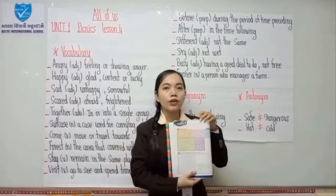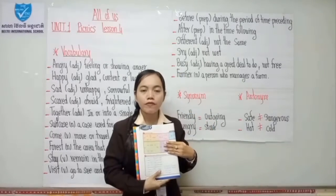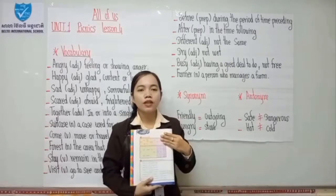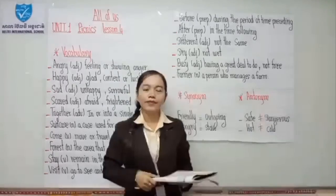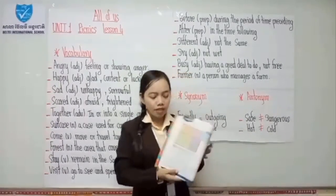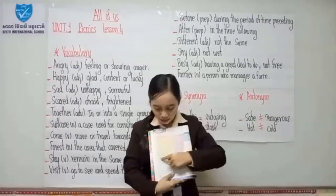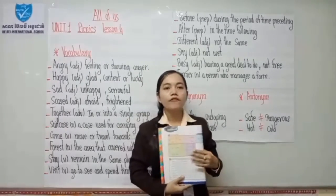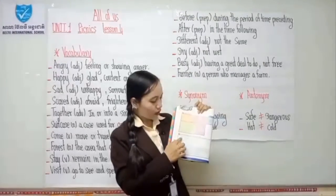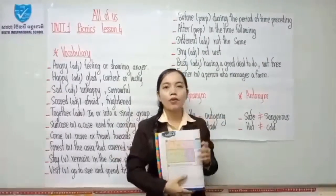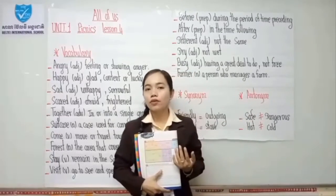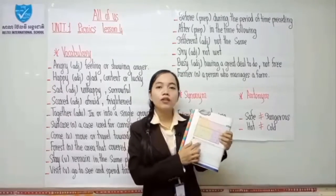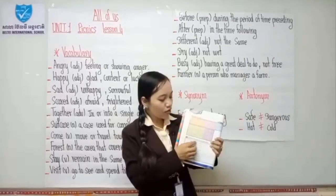Read the grammar point for 5 minutes by yourself before we practice exercise number 2. For example, 'some oranges' — oranges is a countable noun in plural form, so the correct answer is 'there are.' So you choose the correct word and the sentence is correct.